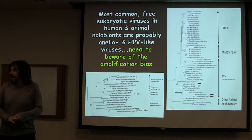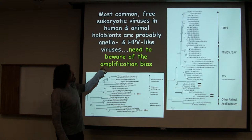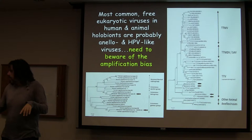The caveat I want you to remember is that one of the reasons we do find these so easily is because of the phi29 amplification bias. So that is what we know about the human virome.